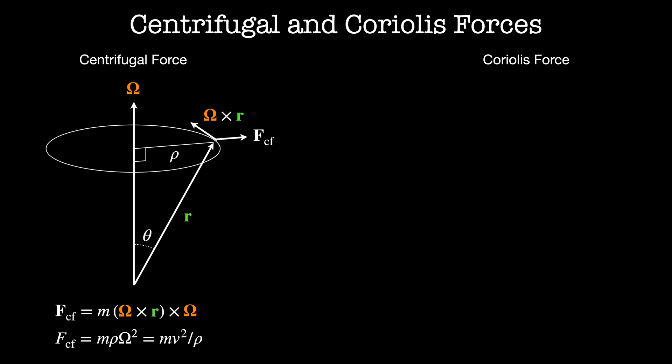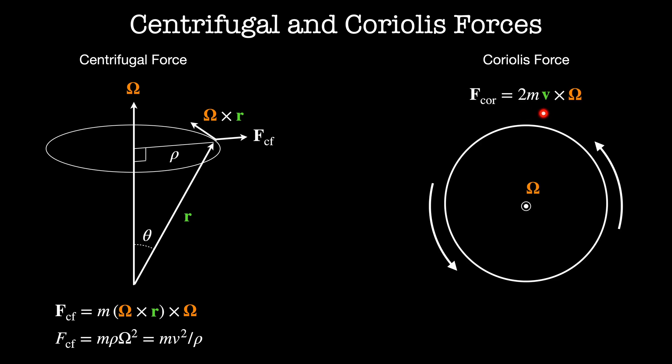Next, we look at the Coriolis force, which is 2 times m times v cross omega. In a rotating 2D reference frame with the angular velocity vector pointing out of the screen: a radial velocity vector pointing away from the center produces a Coriolis force in the opposite direction of rotation, while a tangential velocity vector pointing opposite the direction of rotation produces a Coriolis force pointing radially inward. Linear combinations of these give the directions for all possible Coriolis forces.